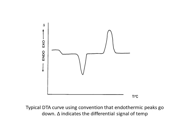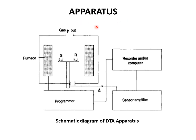Here is the DTA curve — temperature is on the x-axis and change in temperature (delta T) is on the y-axis. The starting point is the baseline; peaks going upward from here exhibit the exothermic process, while peaks going downward show the endothermic process. We can see one downward peak indicating an endothermic event occurred, and upward peaks indicating exothermic processes. Here also is the schematic diagram of the DTA apparatus.